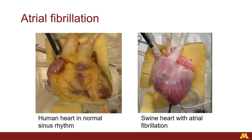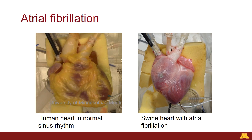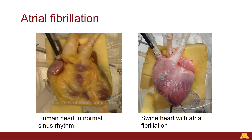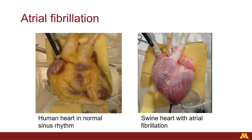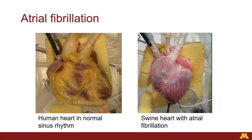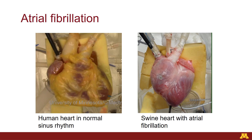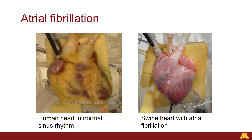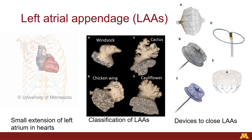Atrial fibrillation is a really common cardiac arrhythmia, particularly in the United States. It's an arrhythmia where the top two chambers of the heart, or the atria, do not conduct electrical impulses normally or regularly. On the left-hand side, you're seeing a human heart beating without an arrhythmia, and on the right-hand side we have a swine heart with atrial fibrillation — you can see how the top two chambers are sporadically conducting and contracting.